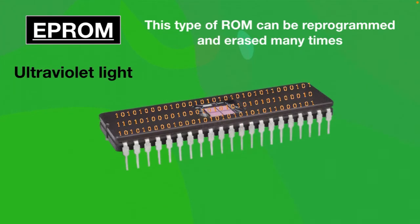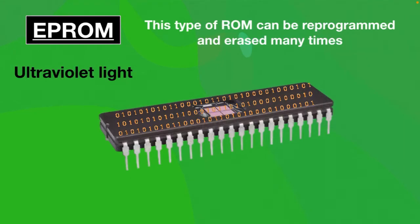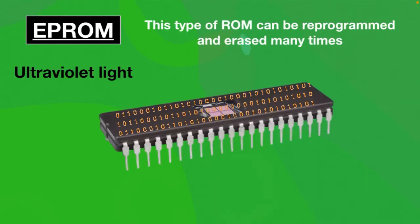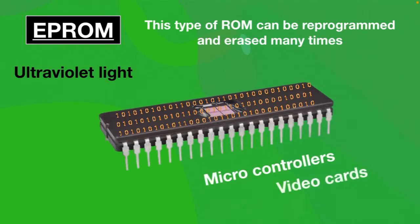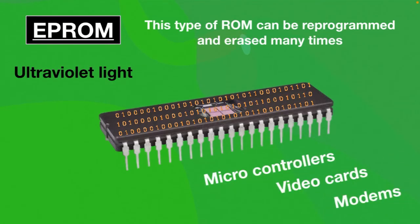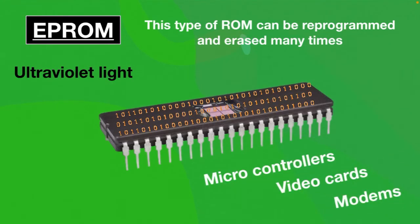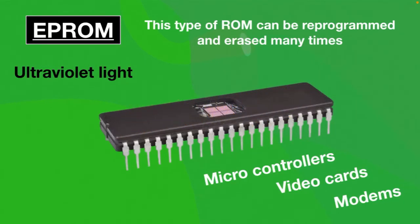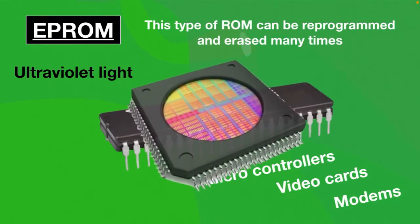You also need a P-ROM burner to reprogram the EP-ROM. It is used in microcontrollers, video cards, and modems. A drawback of EP-ROM is that when you use ultraviolet light to erase data, it deletes all the data from the chip.